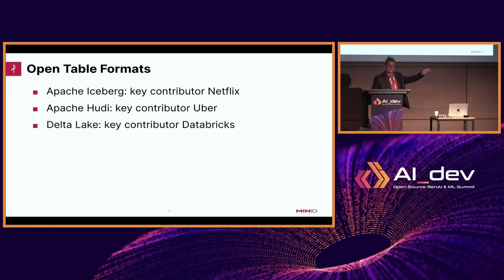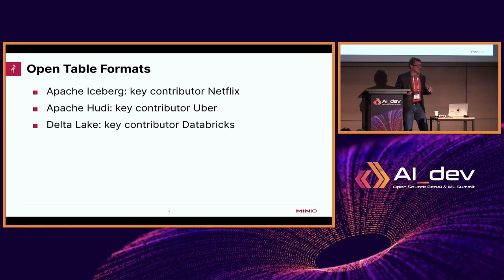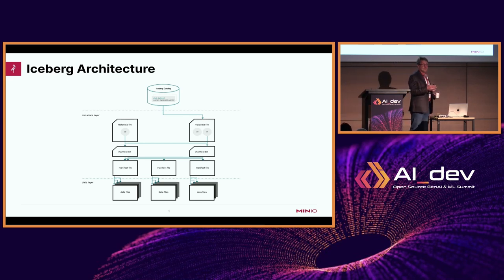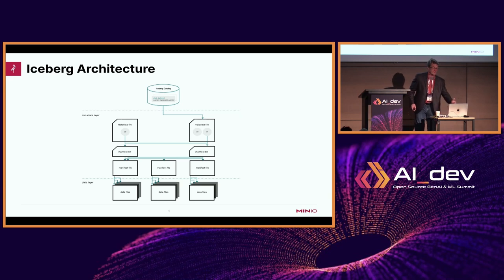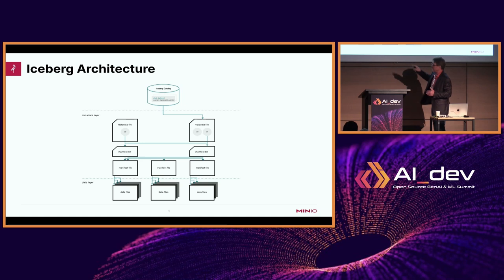If you were at the LakeFS session next door, they do something very similar but with unstructured data. What I'm talking about here is on the structured side of the data lake house. We did some joint messaging with the LakeFS folks — check our blog for posts where we combined ideas on how to use their technology with MinIO. The Iceberg architecture has conceptually the easiest structure to understand: the lowest layer is just your data — think of that as MinIO — with structured data in Parquet or Avro files. The rest is the metadata needed to keep track of where data is for a specific table.